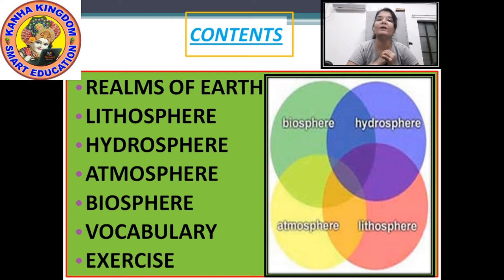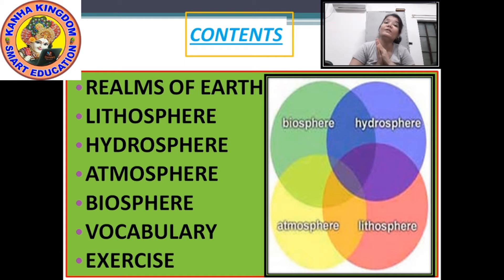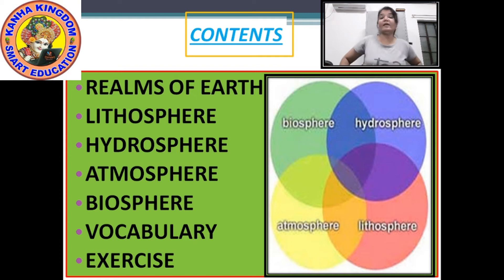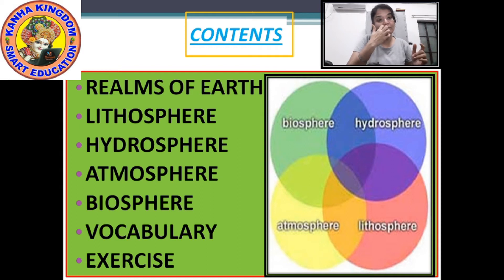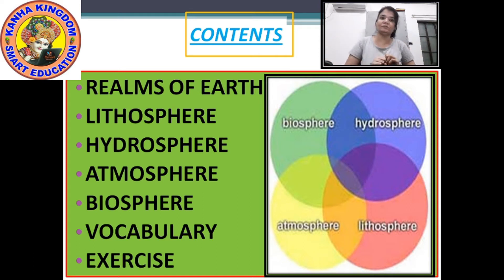Let's take a quick revision of Part 1. We had seen the realms of the Earth — it tells us that the Earth includes land, water, plants, birds, and even us, the human beings. The Earth is made up of both living things and non-living things. We had also seen that all living things are dependent on each other — we are dependent on air, water, plants, and animals.